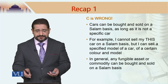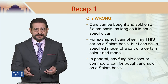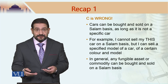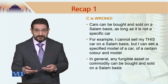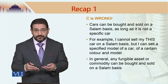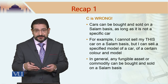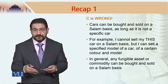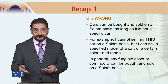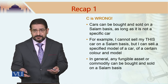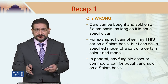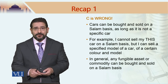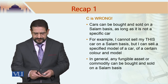In the case of option C, cars are generic commodities that can have specific descriptions. For example, I can sell a Honda Civic of a particular model year in black color on a salam basis, because there would be many such cars available in the market. So cars can be bought and sold on a salam basis.